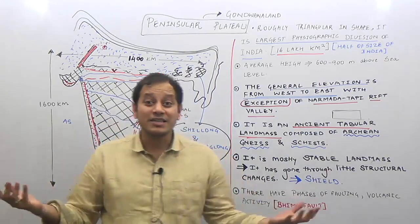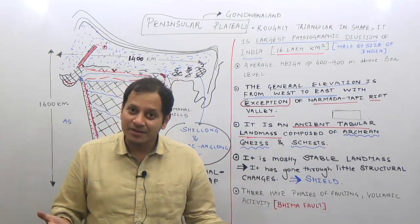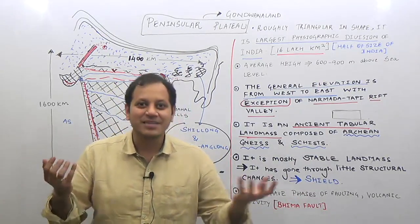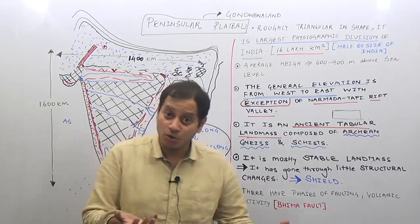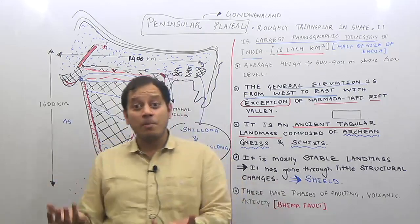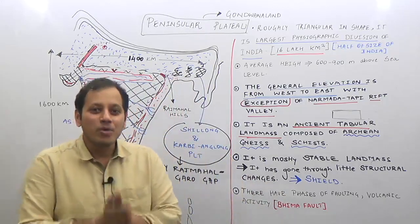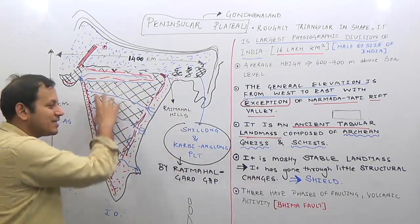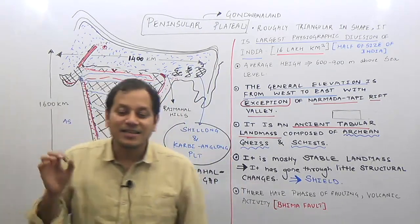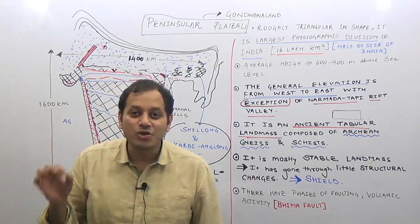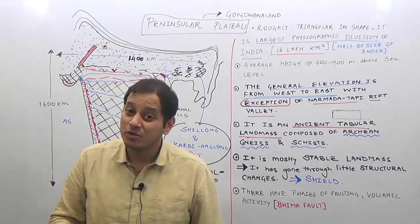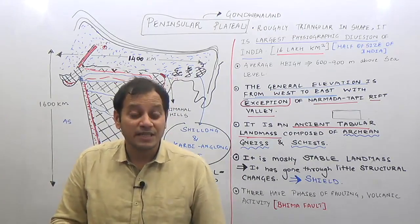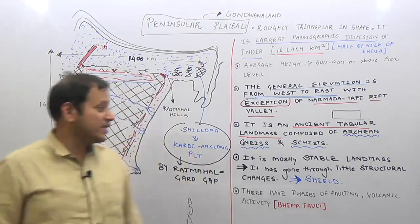Because it is composed of Archean Gneiss and Schist, the peninsular plateau is rich in metalliferous minerals — iron, gold, copper. Therefore, most of the industries in India are located in this region.